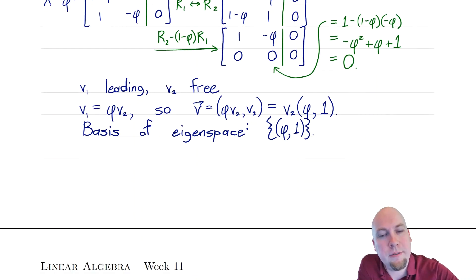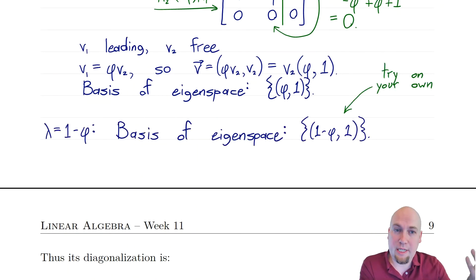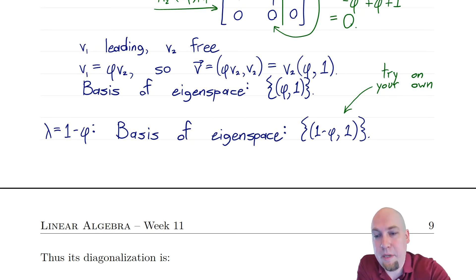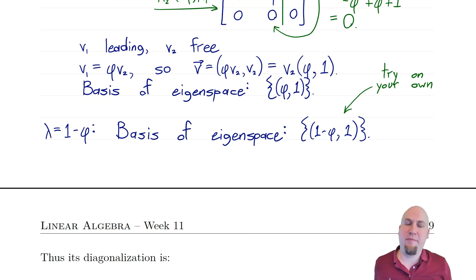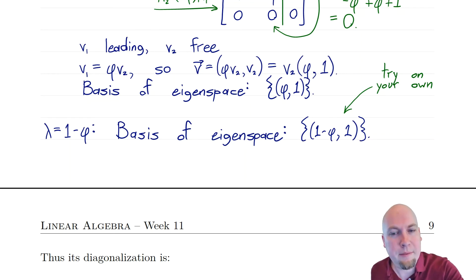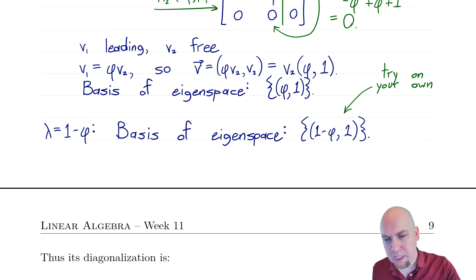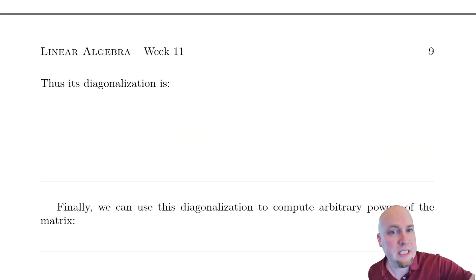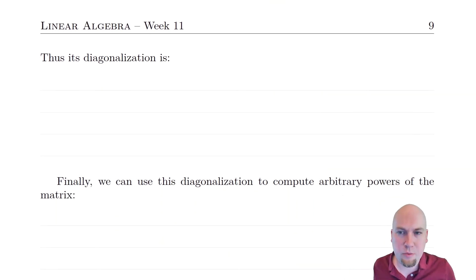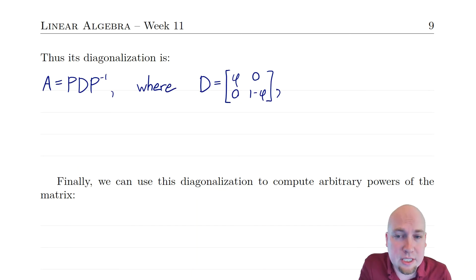That's for lambda equals phi. We also have to do the same thing for lambda equals 1 minus phi. We've spent enough time on eigenvectors in this video, so you can try this on your own. You just subtract (1 − phi) from the diagonal and do the same calculation. The basis of that eigenspace turns out to be [1 − phi, 1].